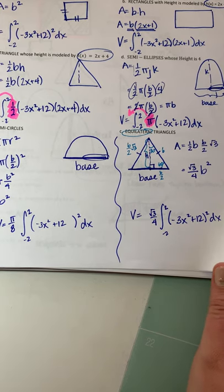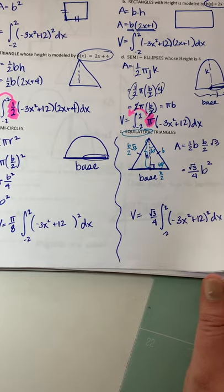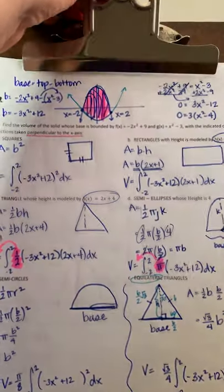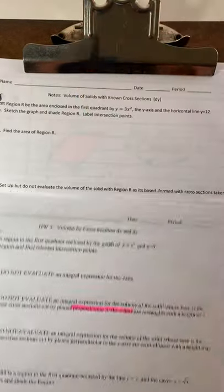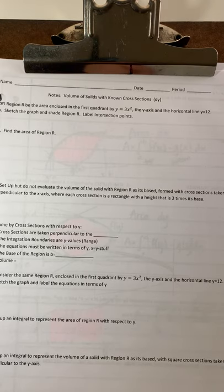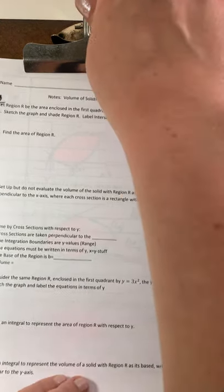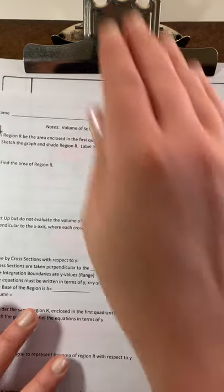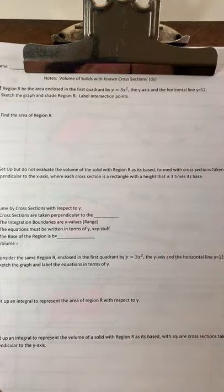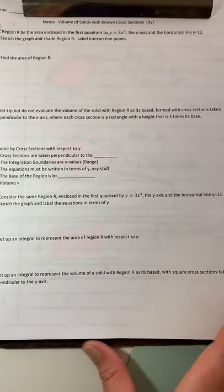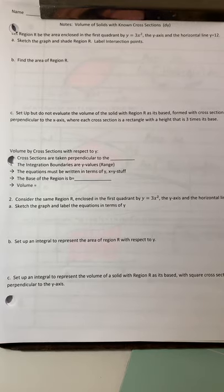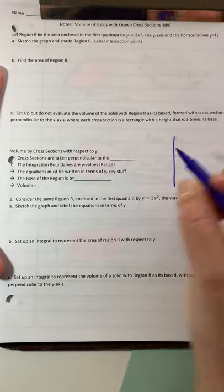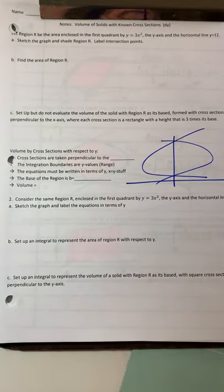Now we move on to doing these integrals with respect to y (dy). Moving to the next sheet — volume of known cross-sections, this time dy. This is where you're working sideways versus up and down, but it's basically the same concept. The top review question will be skipped; we'll jump to volume by cross-sections with respect to y.